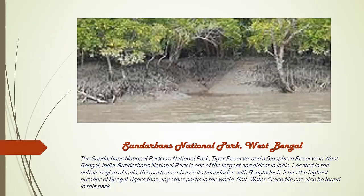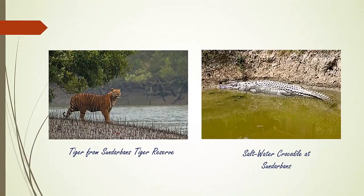Sundarbans National Park is a tiger reserve and biosphere reserve in West Bengal. It is one of the largest and oldest parks in India, located in the deltaic region of West Bengal. The highest number of Bengal tigers are found in Sundarbans National Park, which is also famous for saltwater crocodiles.